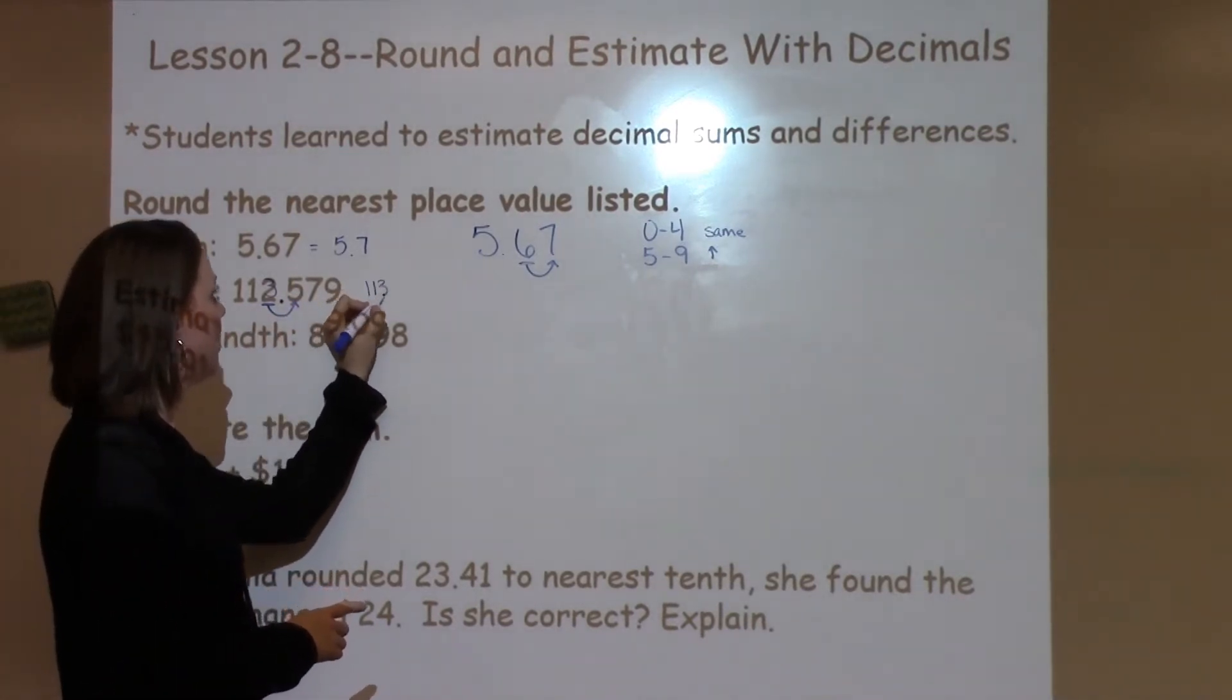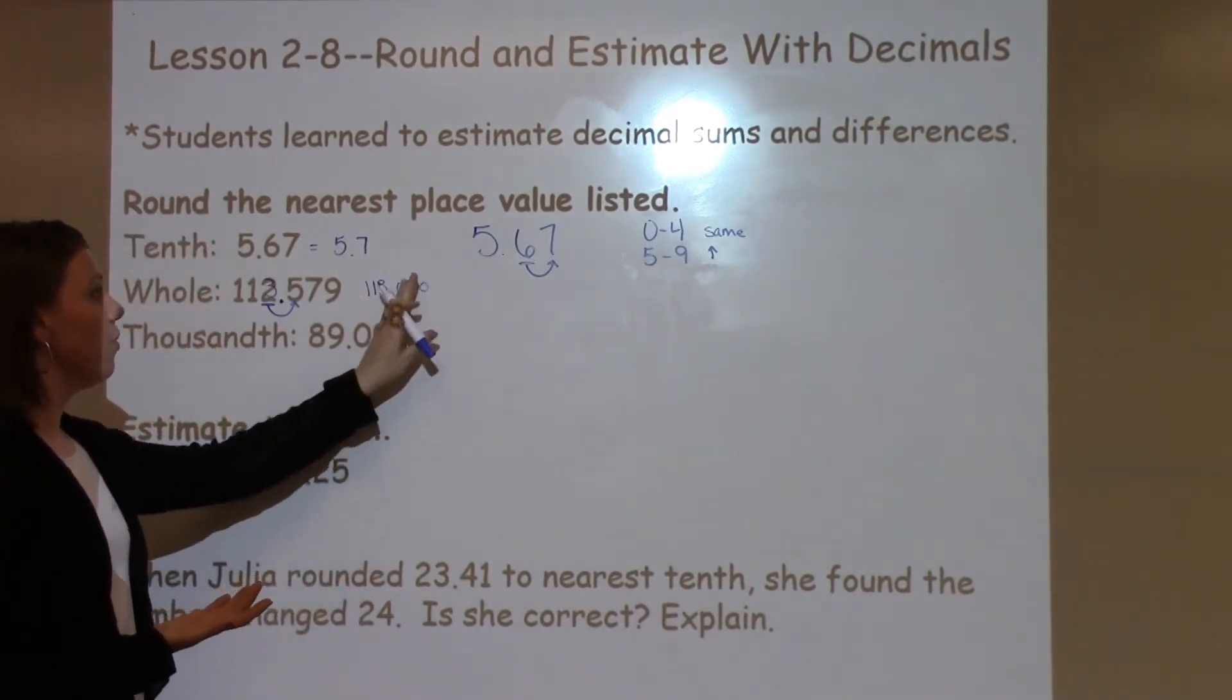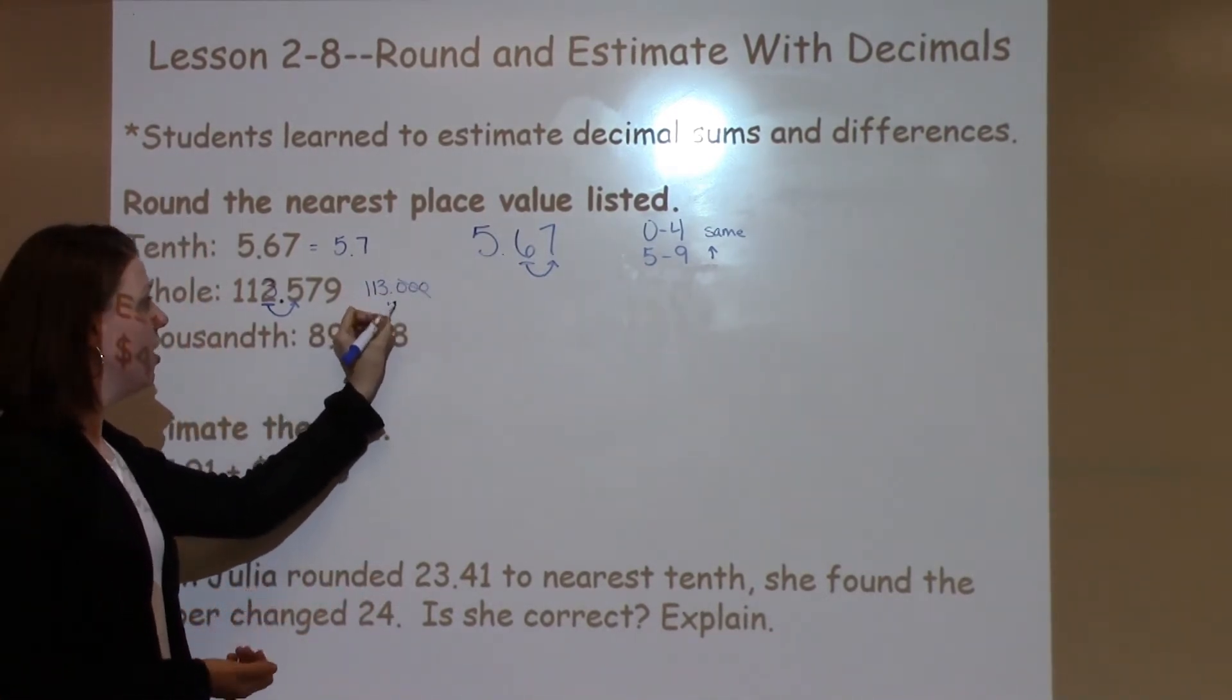So I have 113.000. Those zeros can roll away, just becoming 113.